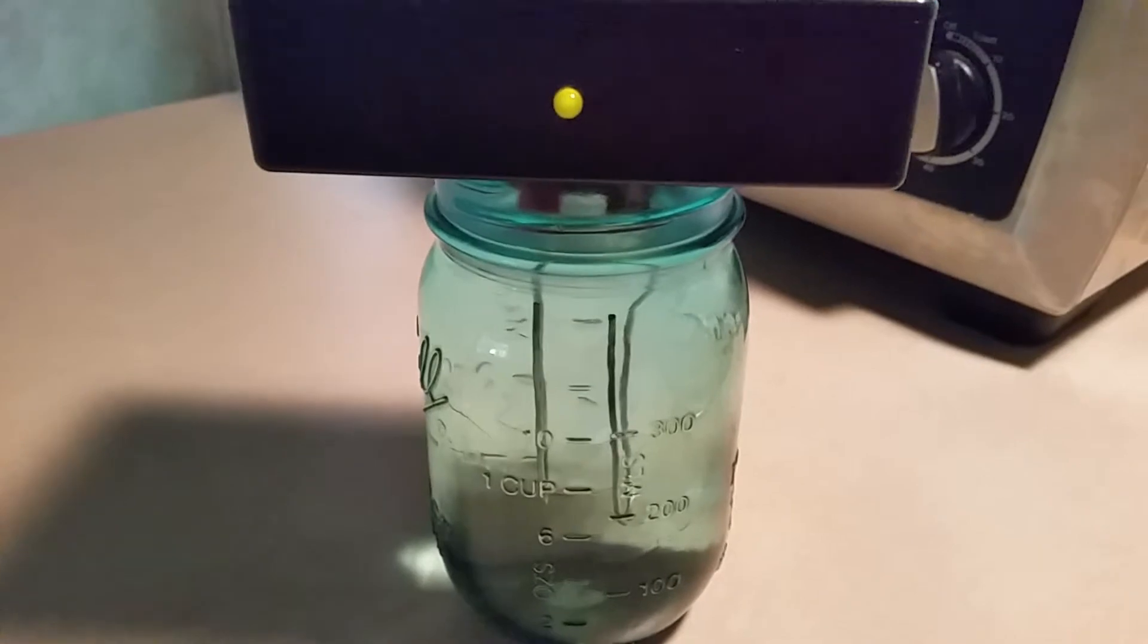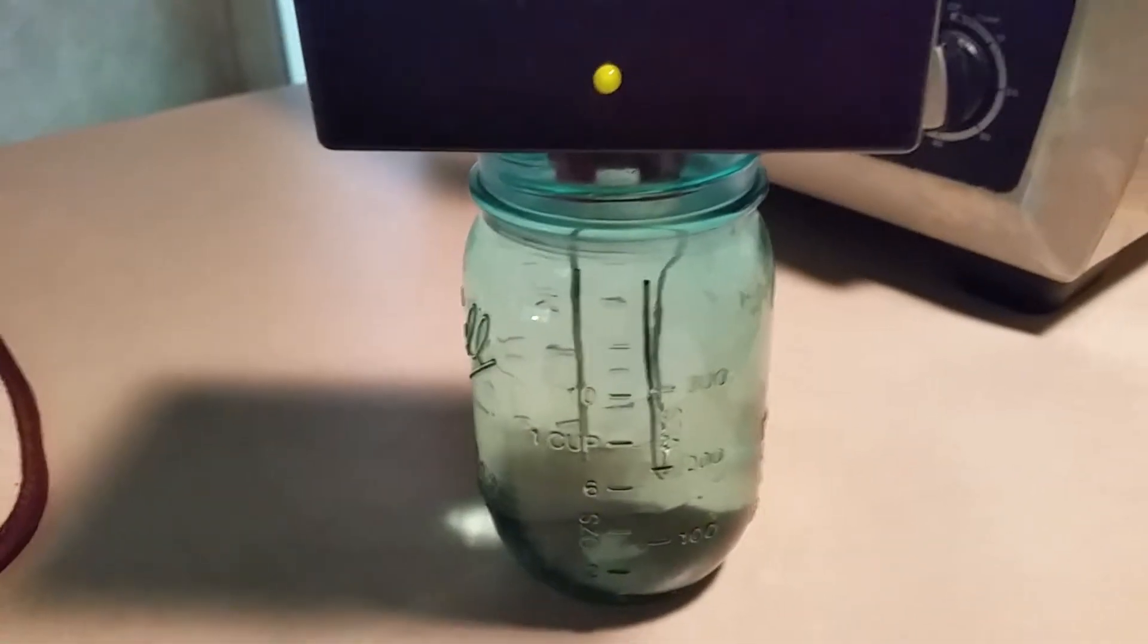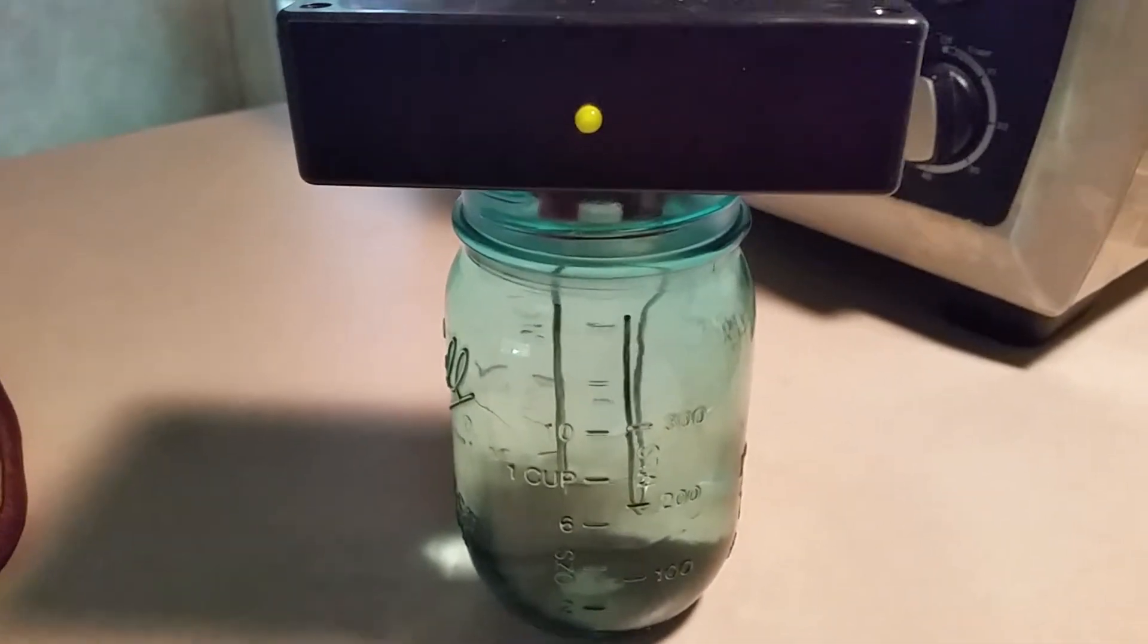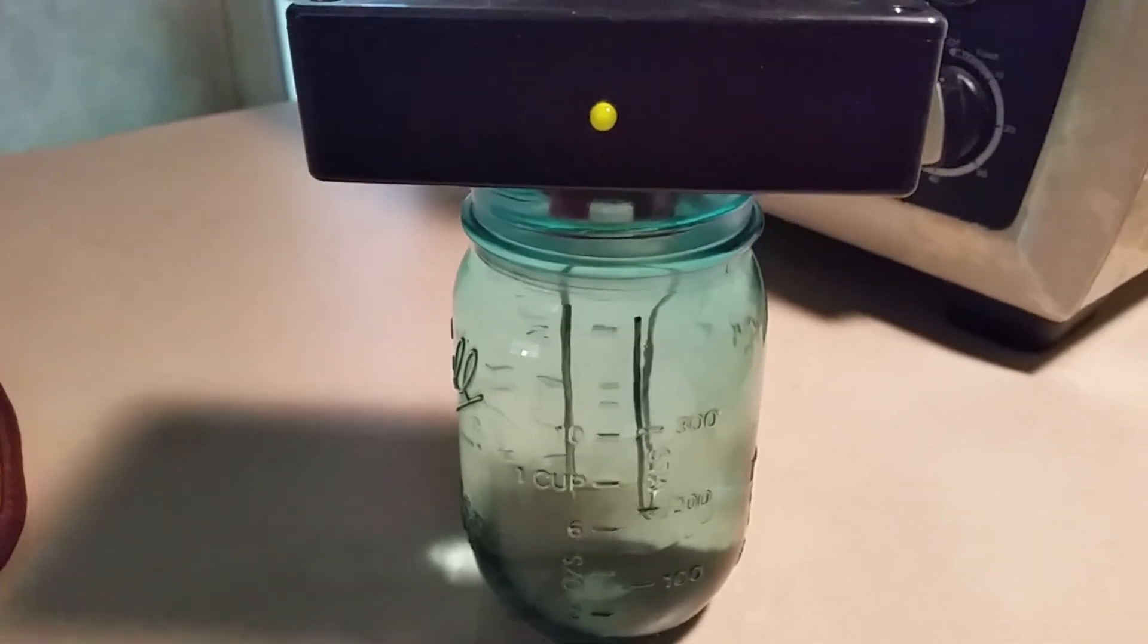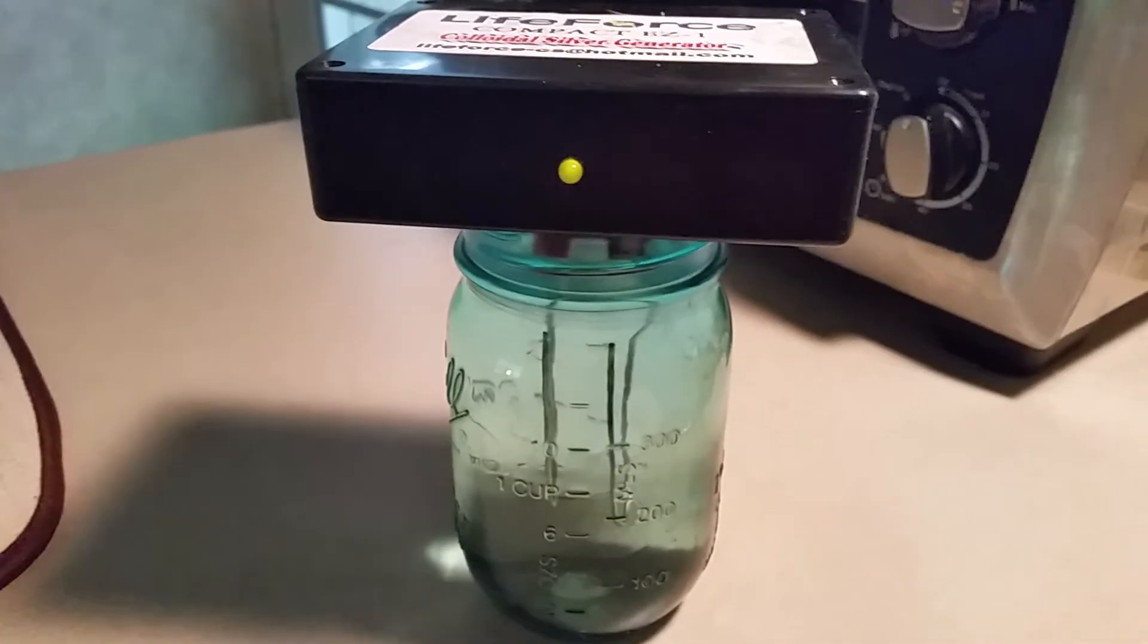I probably paid, I don't know, $45 for the generator. You buy the distilled water and your three 9-volt batteries. And that's about it. It's pretty easy to do. Anybody can make their own colloidal silver. So, thanks for watching.